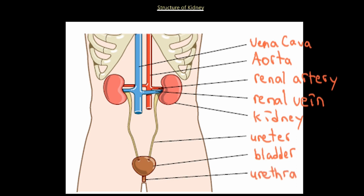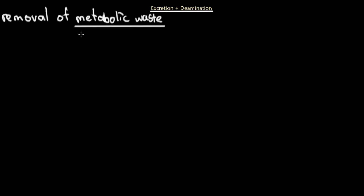Now that we know the structure of the kidney and a little bit about the anatomy of the body, we can talk about the physiology of excretion. Excretion is the removal of metabolic waste. The primary metabolic wastes our body has to remove are carbon dioxide, which is removed through our lungs via the respiratory system, and urea, the main nitrogenous excretory product of humans.